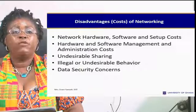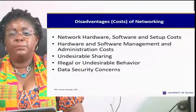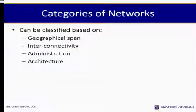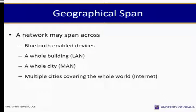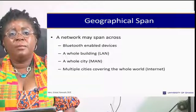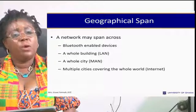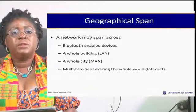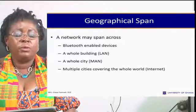There are categories of networks. They can be classified based on geographical span, interconnectivity, administration, and architecture. A network may span across different environments — when you have Bluetooth-enabled devices it's a PAN; a whole building we call LAN; a whole city we call MAN; and multiple cities covering the whole world, we use the internet.